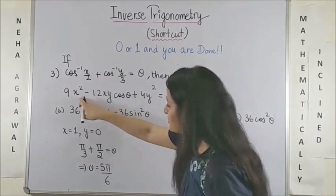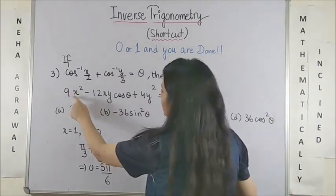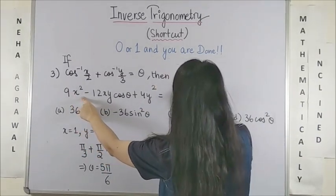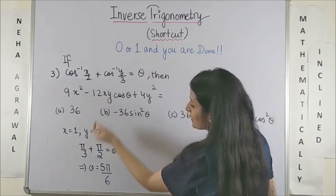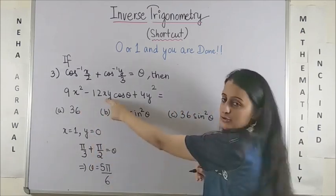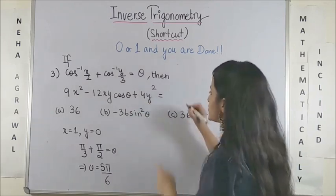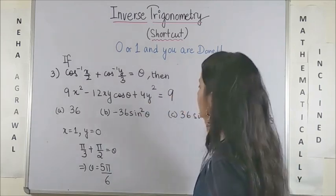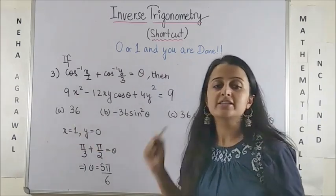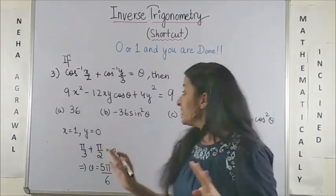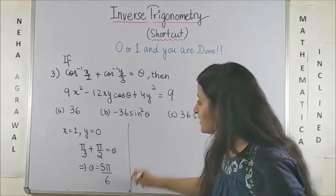Now coming to this expression, this will give me 9 into 1 square which is 9 minus 12 into whatever my y is 0. So this term vanishes plus 4y square again this term vanishes. So the answer is only 9. Now all I need to do is pick from these options whichever is giving me 9 as the answer.